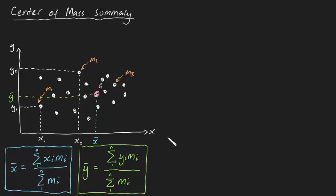From these formulas, you can tell that x-bar and y-bar are just the average positions weighted by mass. But this definition is for a set of discrete masses.